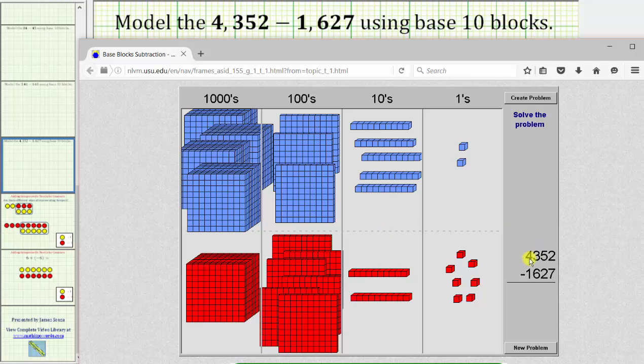This is the beginning model for 4,352 minus 1,627. We want to remove the red quantity from the blue quantity.